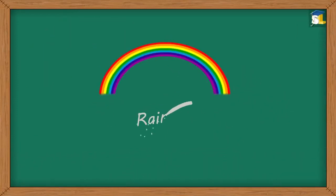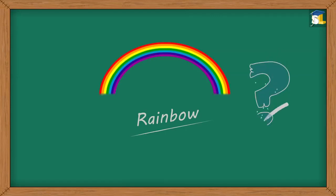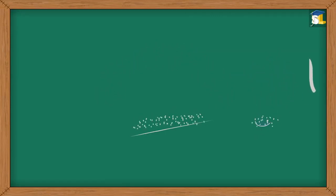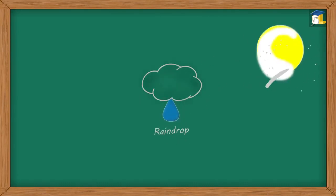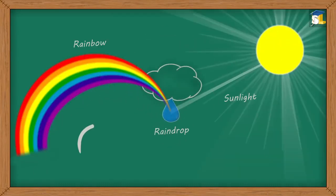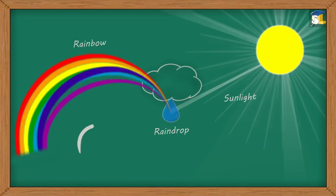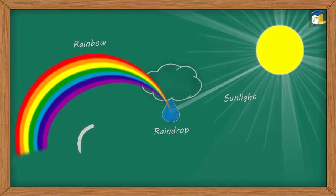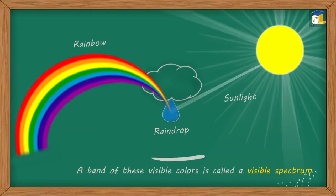It is such a beautiful rainbow. Have you ever wondered how it is formed? A rainbow is formed when raindrops split sunlight into different colors. Sunlight, or white light, consists of many colors. However, only a few of them are visible to us. A band of these visible colors is called a visible spectrum.